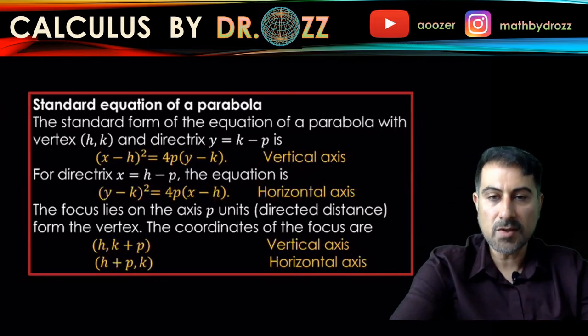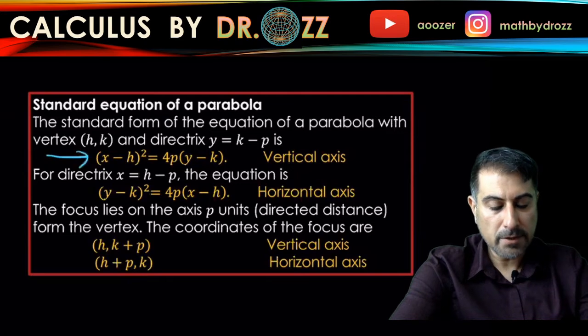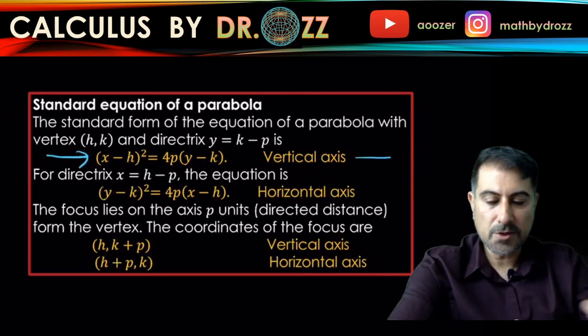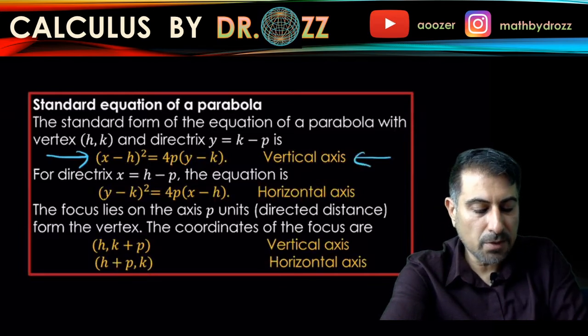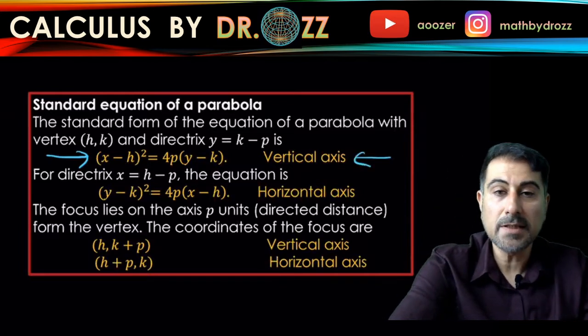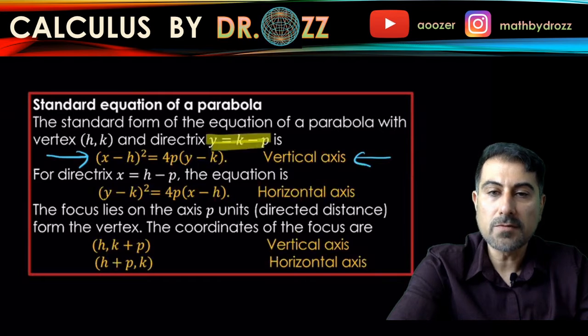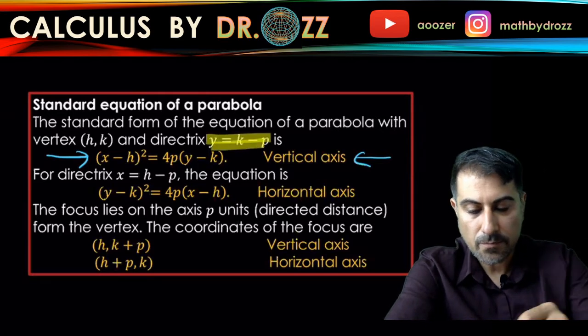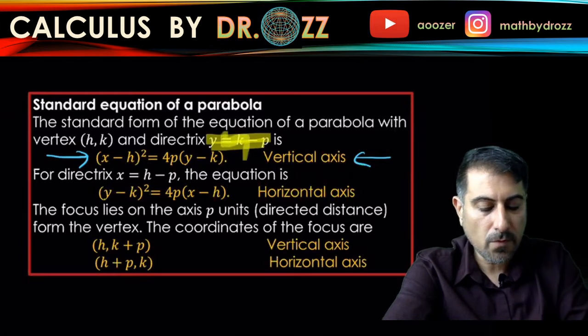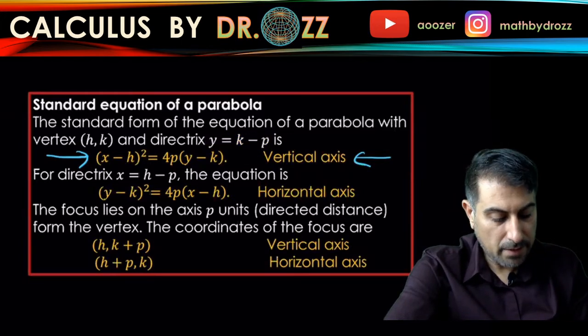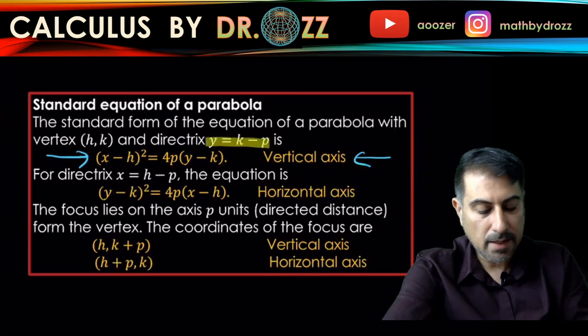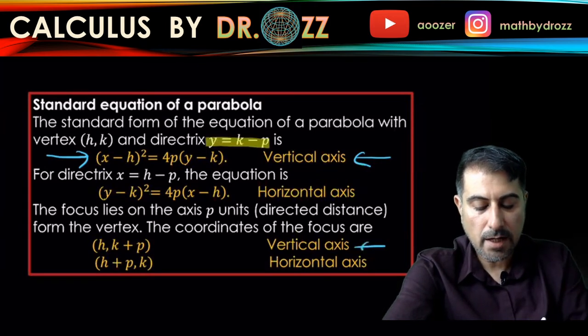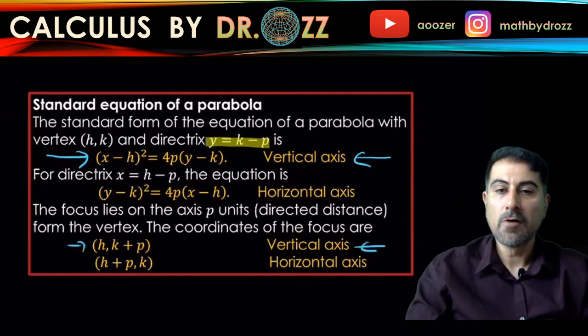First of all, since x is raised to the power of 2, we have this form where the major axis is vertical. For that purpose we have the directrix coming with the formula y equals k minus p, and the location of the vertex is h and k. For the vertical axis case, the location of the focus is h and k plus p.